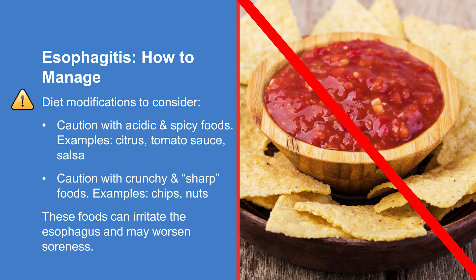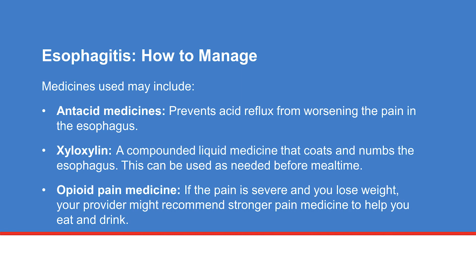Modifying your diet may help relieve esophagitis. Be cautious with acidic and spicy foods, including citrus foods, foods made with tomatoes, and crunchy foods like chips and nuts, as these can irritate the esophagus and may worsen soreness. Common medicines can also help ease symptoms. Antacid medicines are used to prevent acid reflux, which can cause pain. Xiloxalin is a compounded medicine that coats and numbs the esophagus temporarily; patients often use it as needed before mealtime.